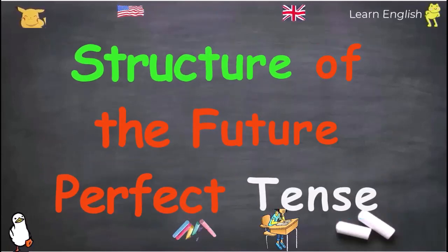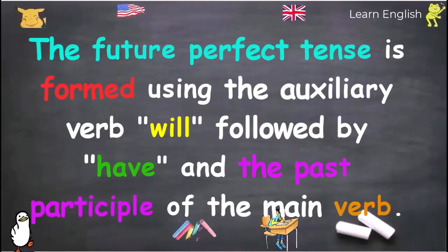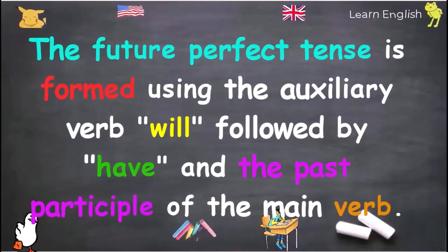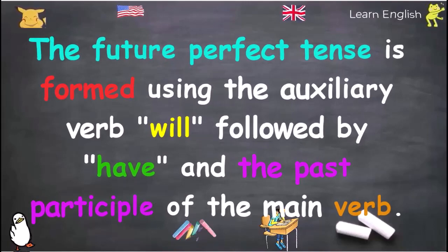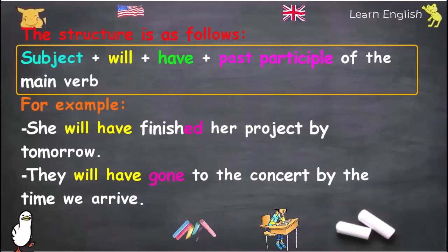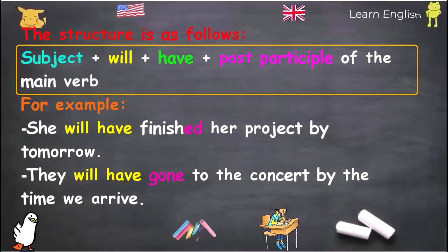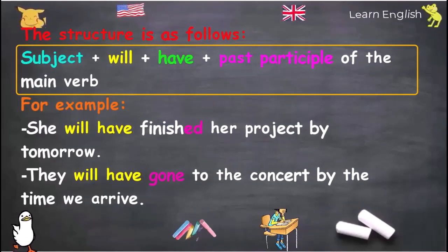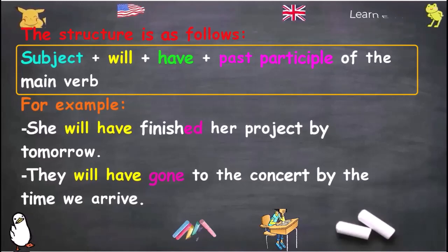Structure of the Future Perfect Tense. The Future Perfect Tense is formed using the auxiliary verb 'will,' followed by 'have,' and the past participle of the main verb. The structure is as follows: Subject + will + have + past participle of the main verb.